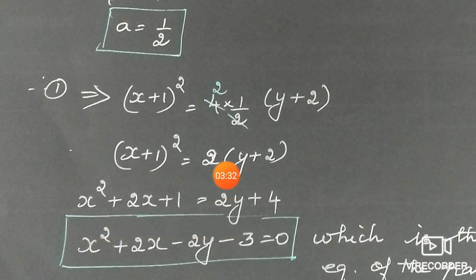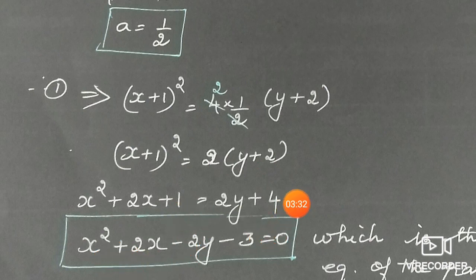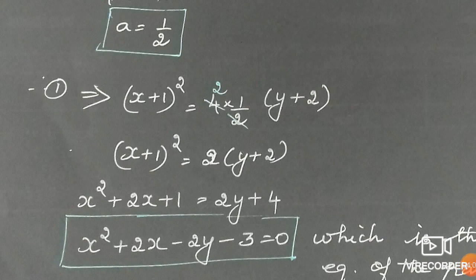Expanding (x + 1)² = 2(y + 2): the right side gives 2y + 4. Expanding the left side: x² + 2x + 1 = 2y + 4. Rearranging: x² + 2x - 2y + 1 - 4 = 0, therefore x² + 2x - 2y - 3 = 0. This is the required equation of the parabola. Thank you.